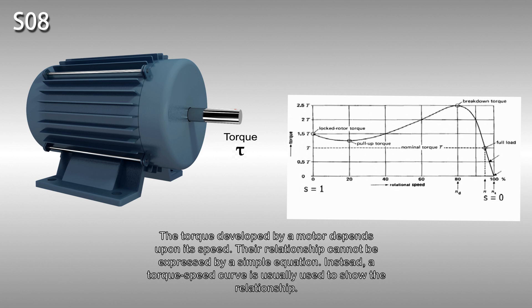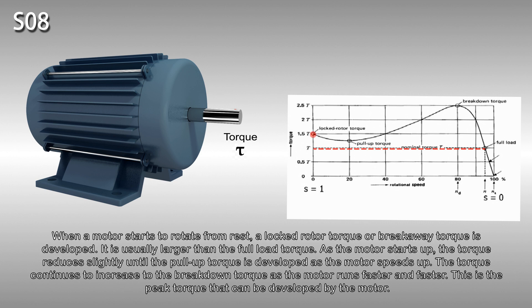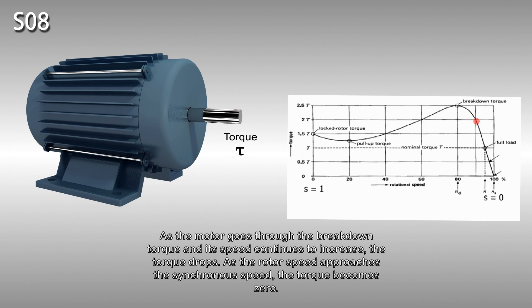The torque developed by a motor depends upon its speed. Their relationship cannot be expressed by a simple equation. Instead, a torque speed curve is usually used to show the relationship. When a motor starts to rotate from rest, a locked rotor torque, or breakaway torque, is developed. It is usually larger than the full load torque. As the motor starts up, the torque reduces slightly until the pull-up torque is developed as the motor speeds up. The torque continues to increase to the breakdown torque as the motor runs faster and faster. This is the peak torque that can be developed by the motor. As the motor goes through the breakdown torque and its speed continues to increase, the torque drops. As the rotor speed approaches the synchronous speed, the torque becomes zero.